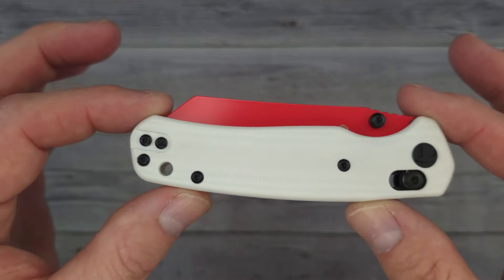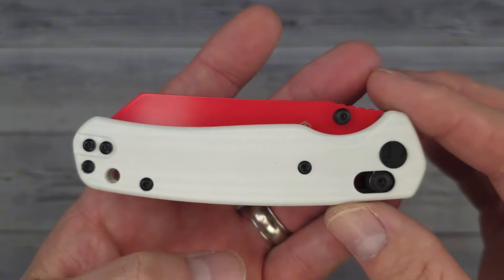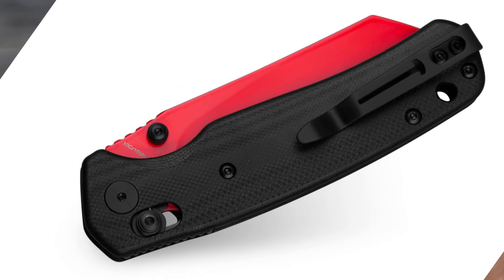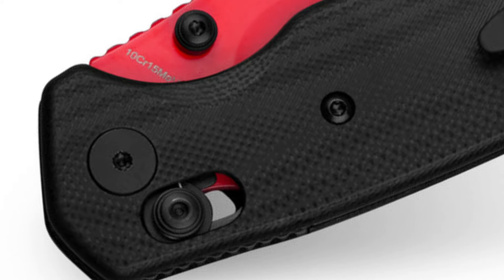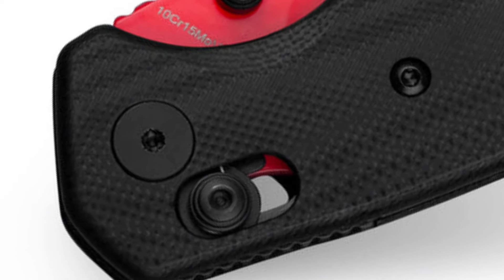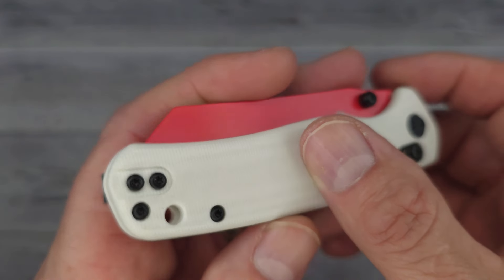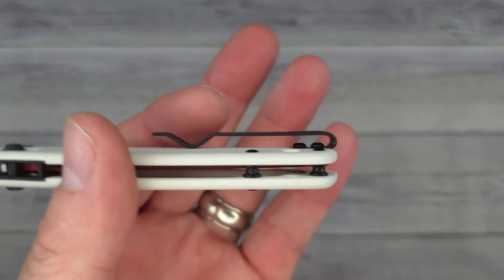Right off the bat, this is G10. It doesn't have a whole lot of texture. I don't know if I'll be able to get you in there to see much texture or not because it's white, but it's rather smooth to the touch. This is telling me that we have a reversible deep carry clip.